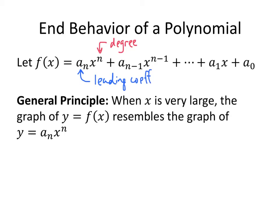The end behavior of our polynomial talks about what happens when x gets really large — either a really large positive number or a really large negative number. It turns out that when x is really large, the leading term, a-sub-n times x to the n, dominates the behavior of the polynomial. So even though there's all this other stuff, it isn't nearly as important as that first leading term. If we know what the leading term does when x is really large, then that tells us what the whole polynomial does.